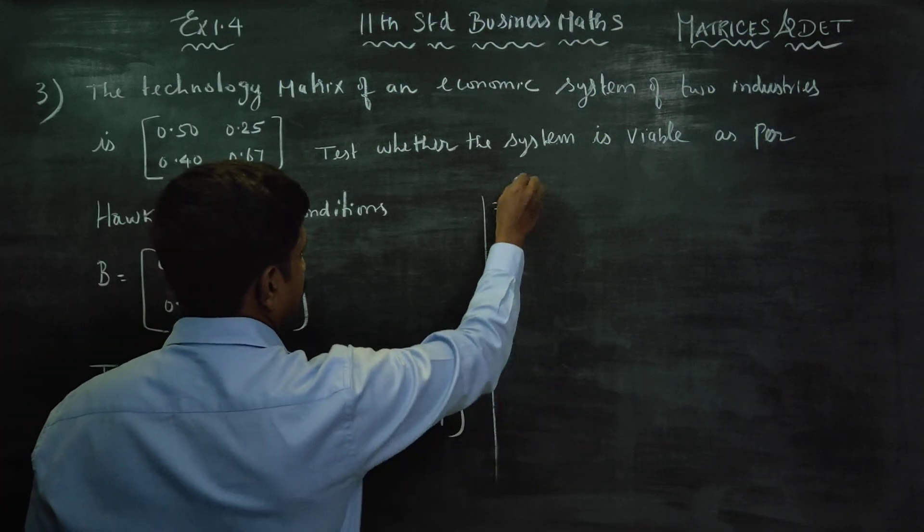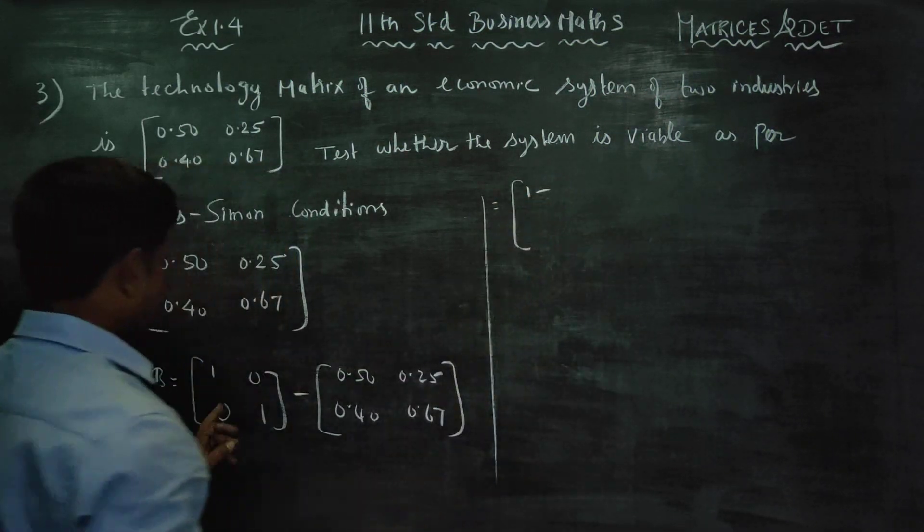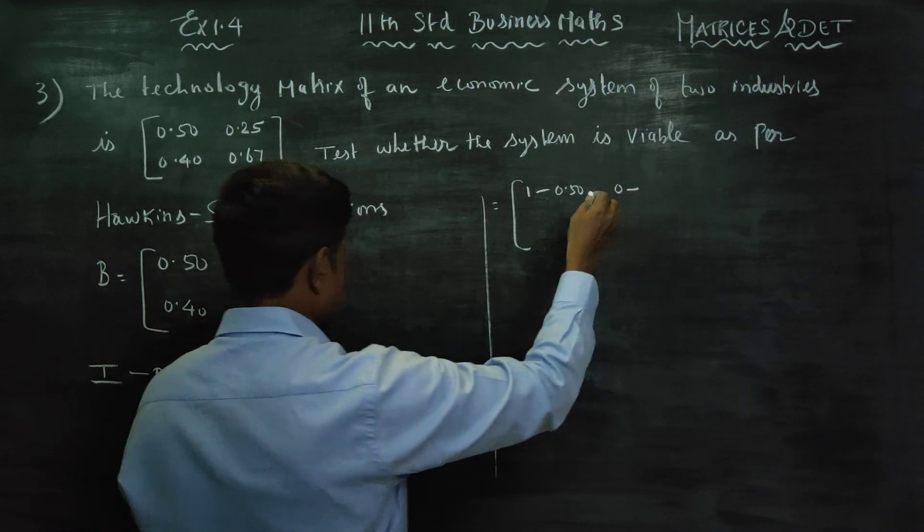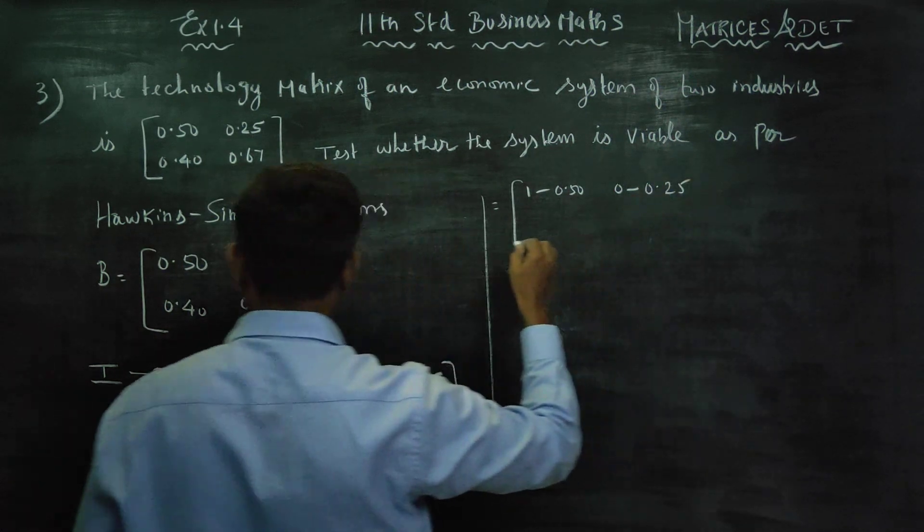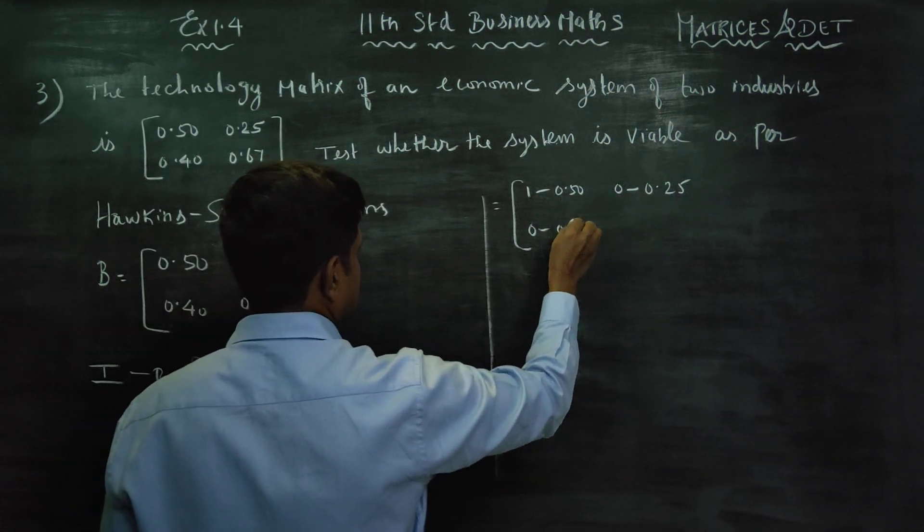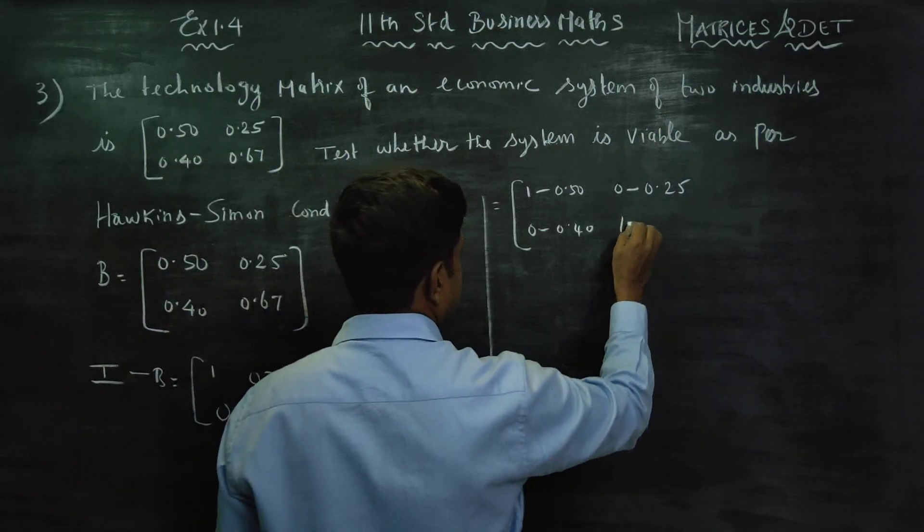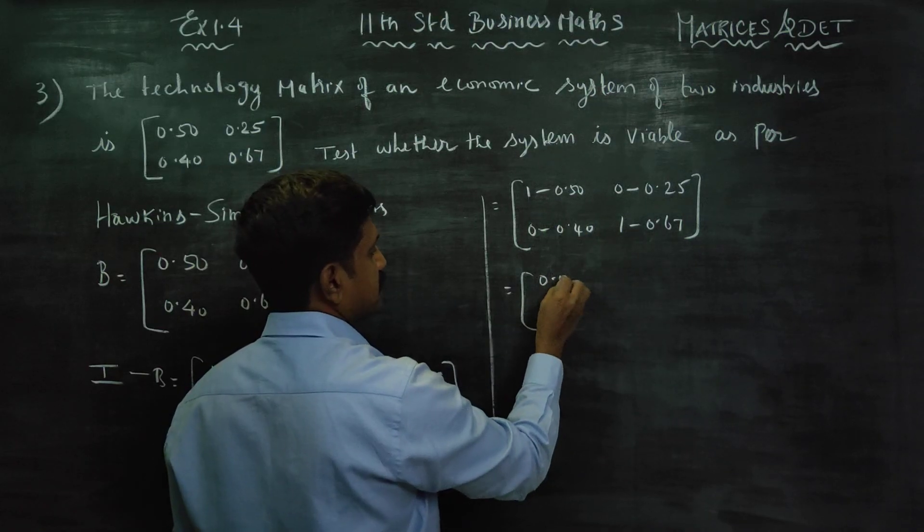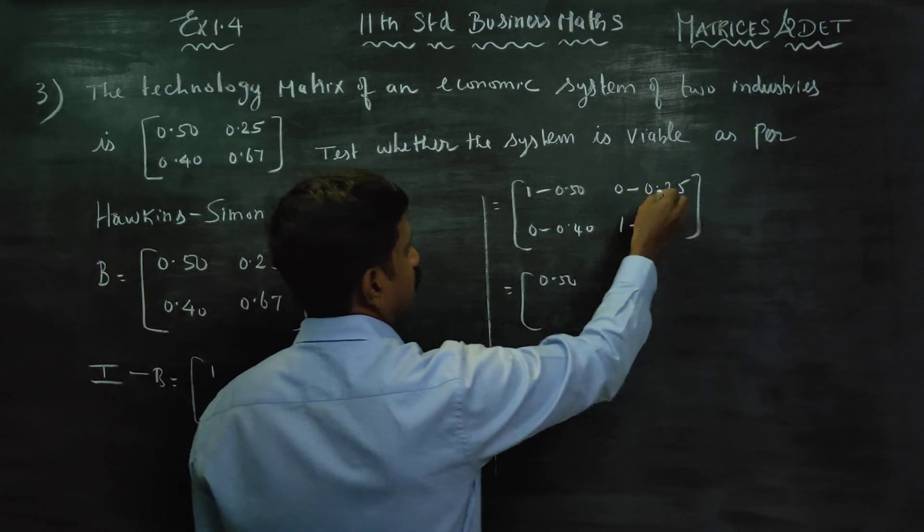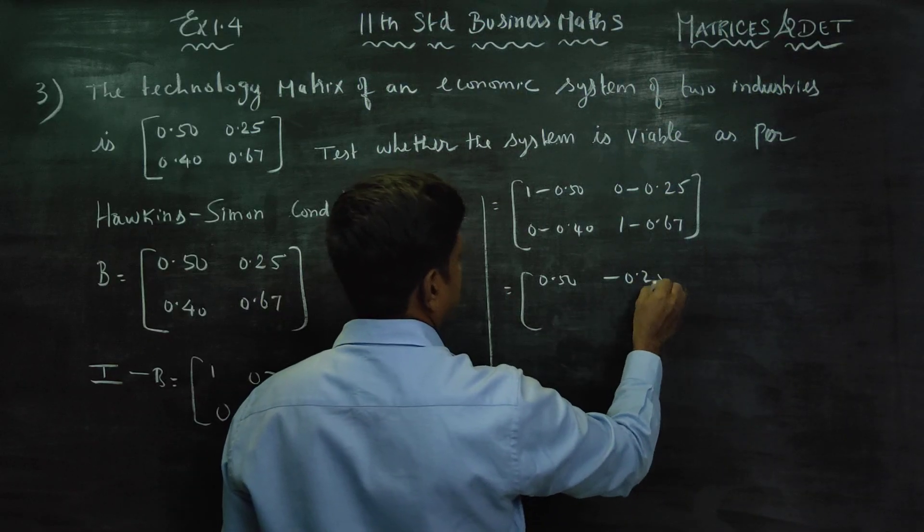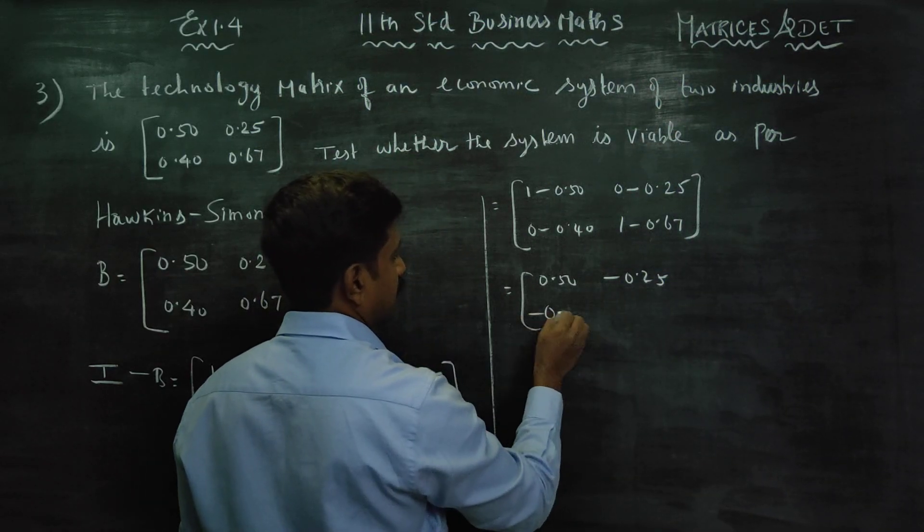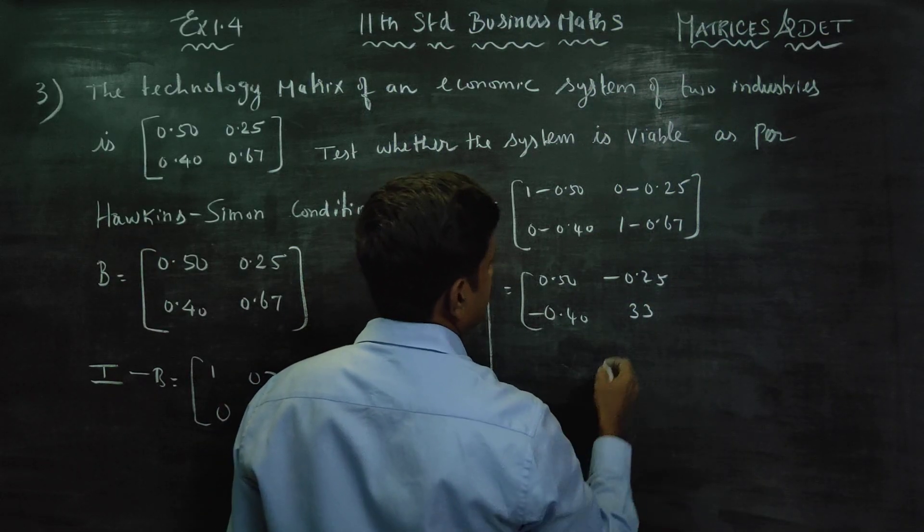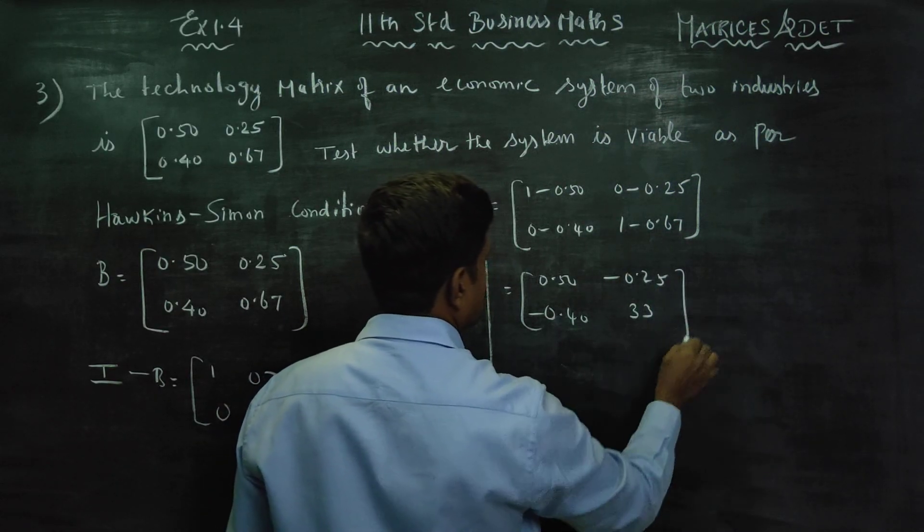If you want to subtract: 1 minus 0.50, 0 minus 0.25, 0 minus 0.40, 1 minus 0.67. This gives values of 0.50, -0.25, -0.40, and 0.33.